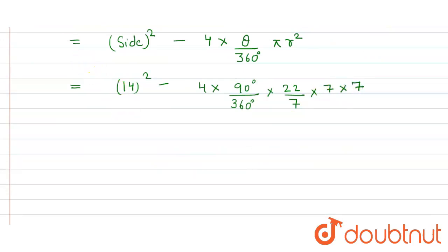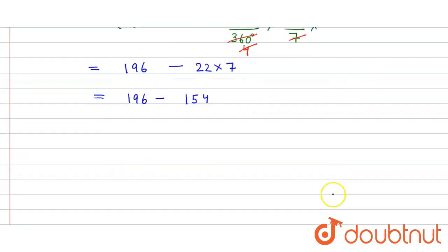So here now we solve it. This 90 cancels this 360 and we get 4, and this 4 cancels this 4, this 7 cancels out from here. So we get 14 square is 196 minus 22 into 7.